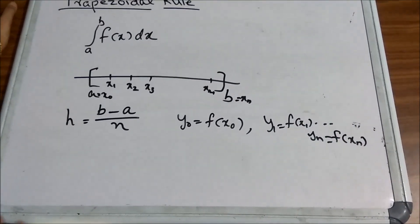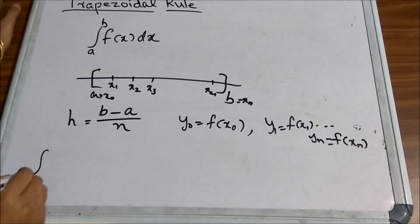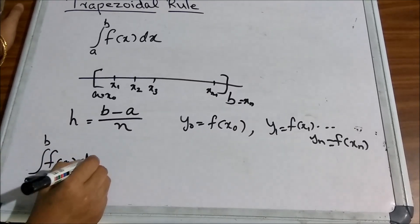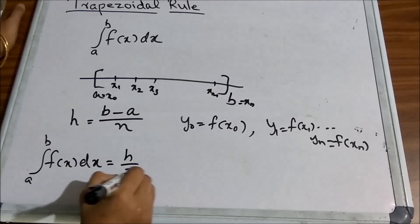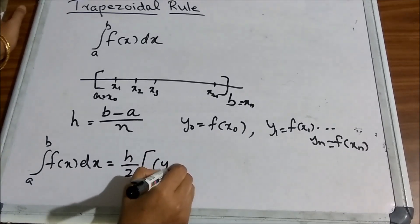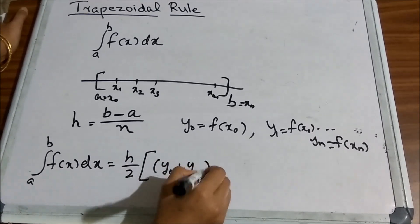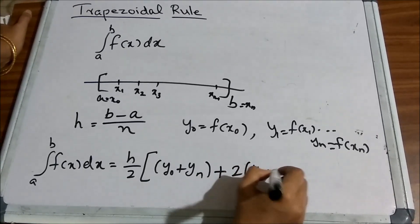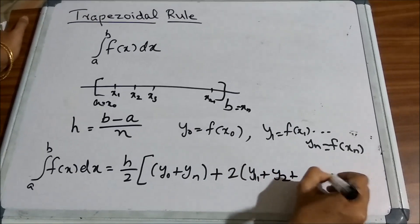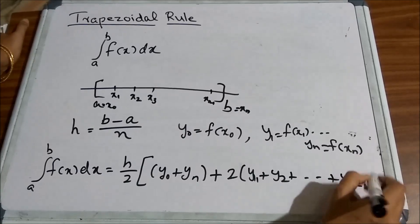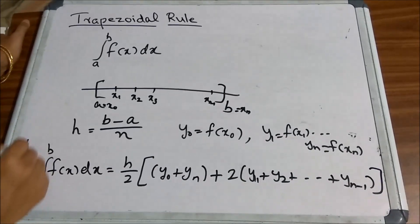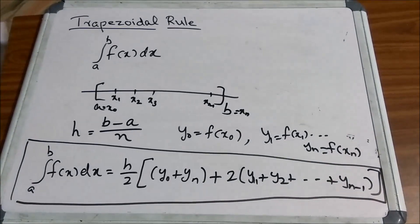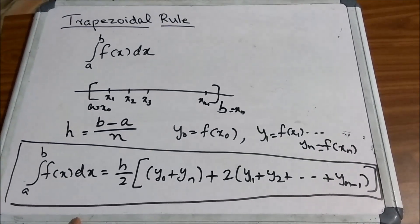Now, you can apply this Trapezoidal Rule as integral a to b f of x dx is equal to h by 2 into y0 plus yn plus 2 into y1 plus y2 plus etc. plus yn minus 1. So, this is the formula used to evaluate integral a to b f of x dx using Trapezoidal Rule.